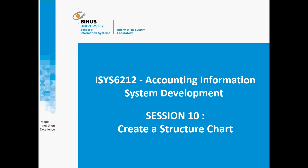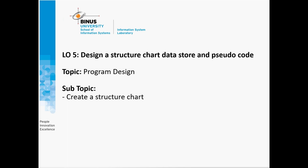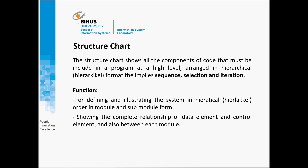Hello everyone. In the 10th session of the Account Information System Development course, we're talking about creating a structure chart. The structure chart shows all the components of code that must be included in a program at a high level, arranged in hierarchical format, with implied sequence, selection, and iteration. The components are usually read from top to bottom, left to right, and they are numbered by a hierarchical numbering scheme in which lower levels have an additional level of numbering.